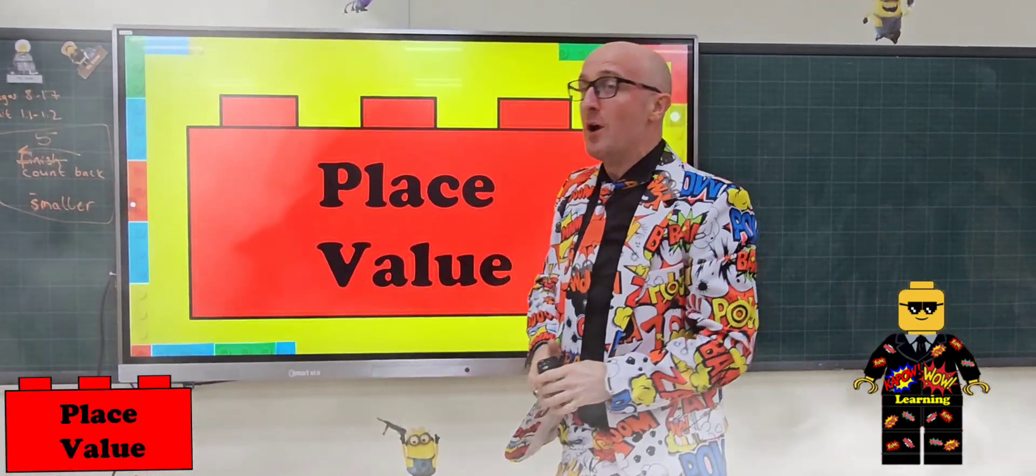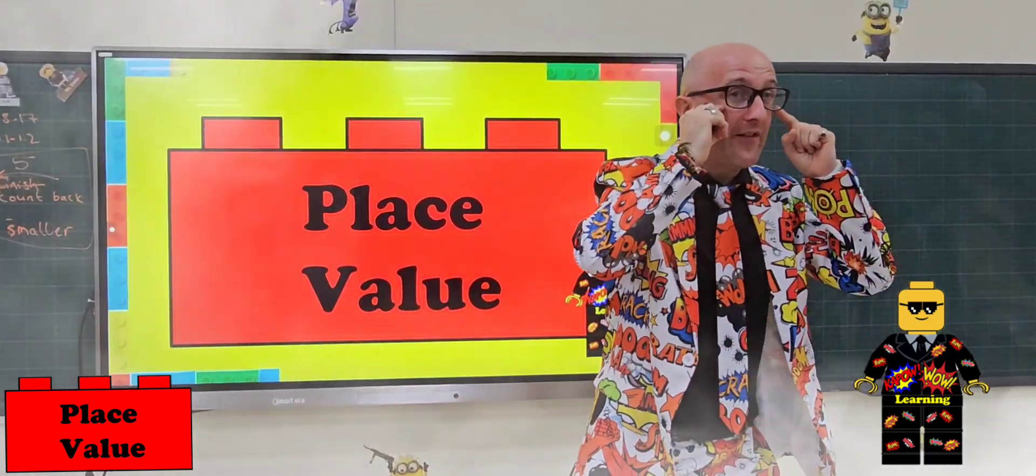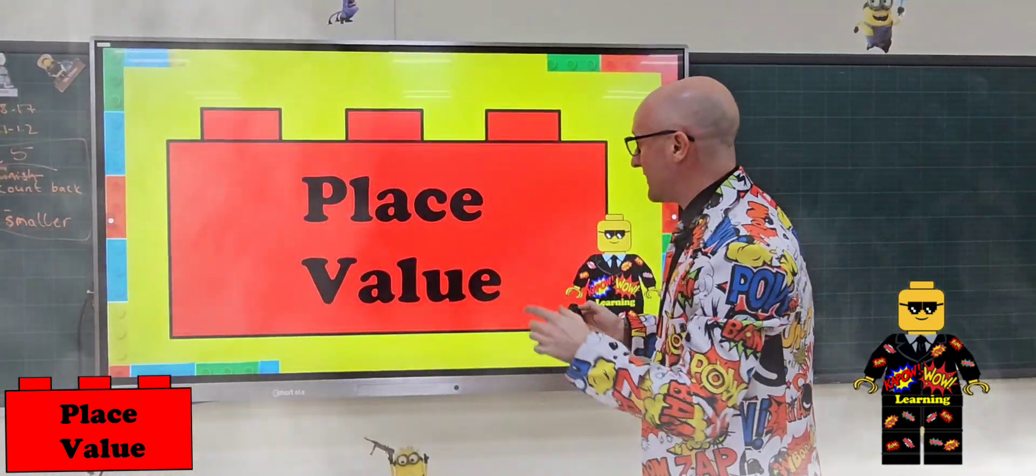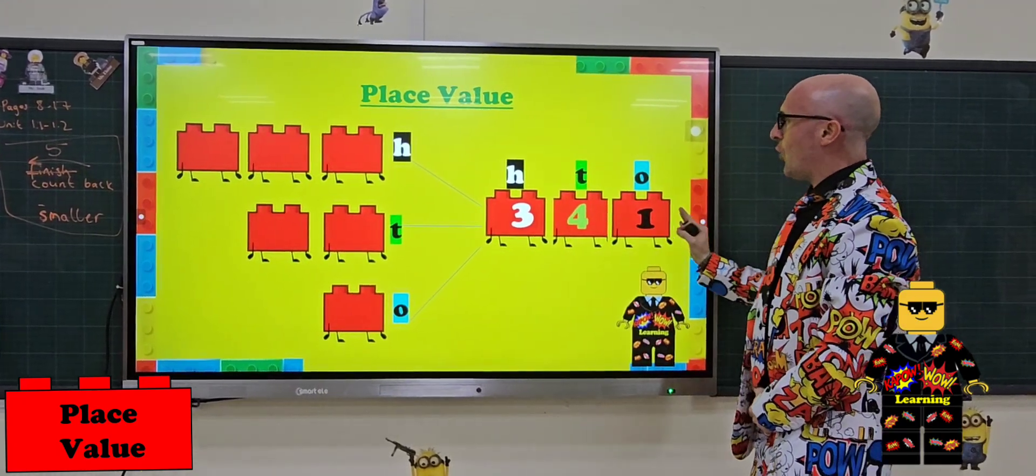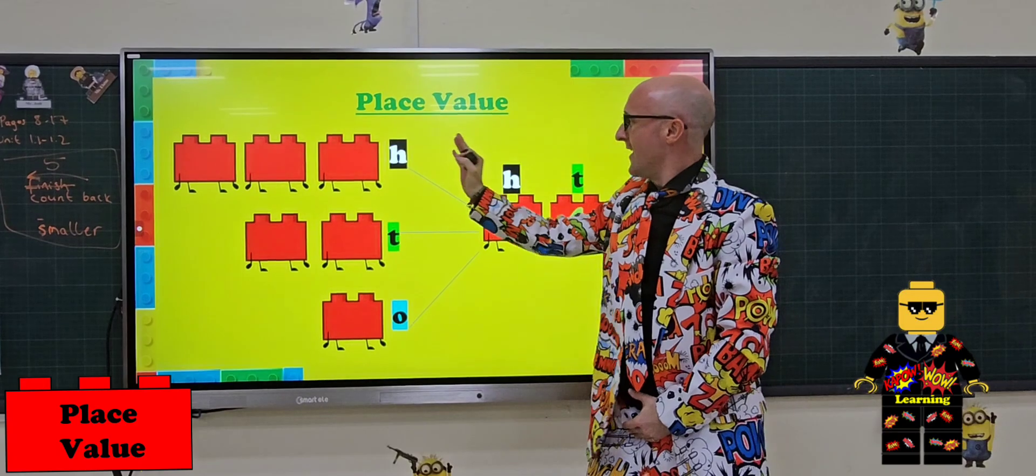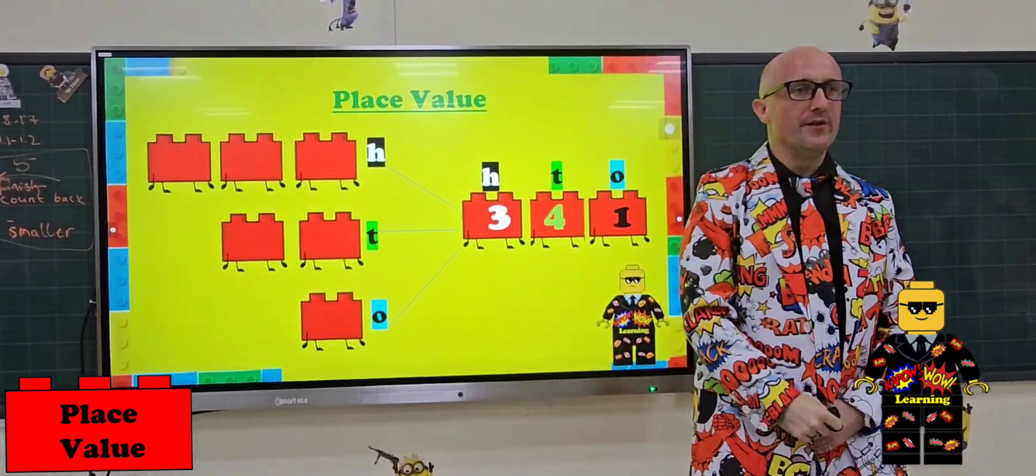Place value. So let's be quiet, let's have our Kapowow eyes on and let's see what we can do. Right, we're looking at place value. Now we've got 3, 4, 1. But we need to break it up into, partition, into 100s, 10s and 1s.